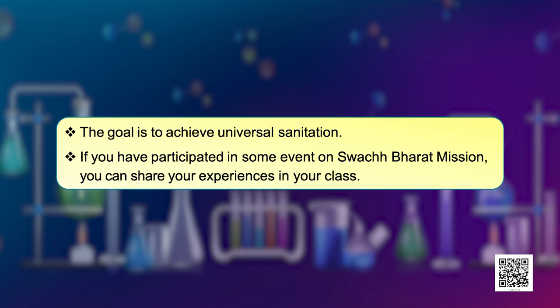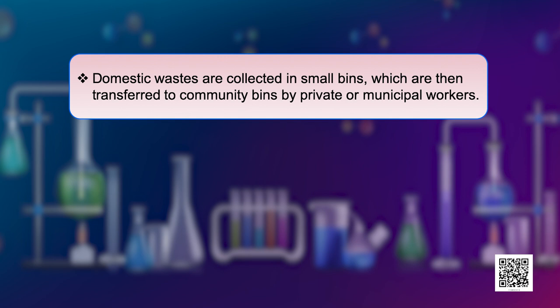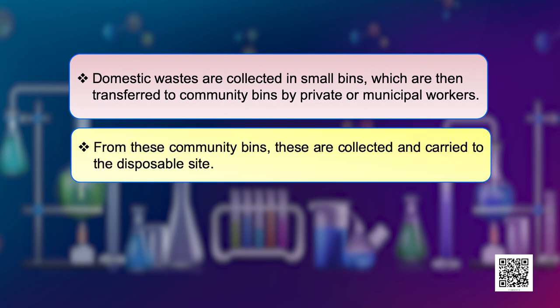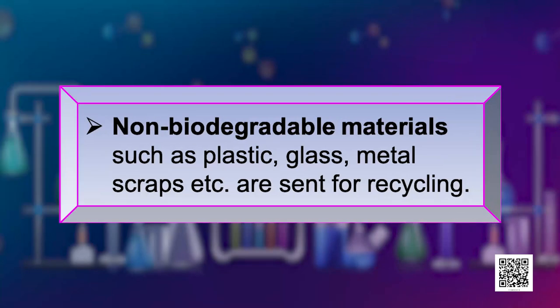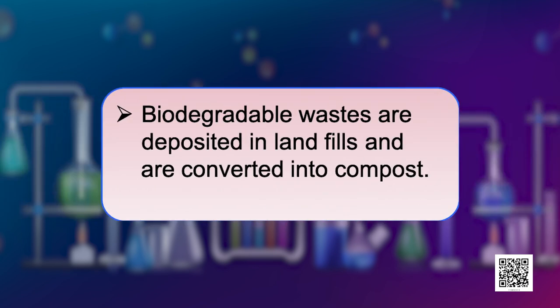If you have participated in some of the events with reference to the Swachh Bharat Mission, you can also share your experiences in your class. Coming to the disposal and collection of waste: domestic waste is collected in small bins which are then transferred to the community bins by private or municipal workers. From these community bins, they are collected and carried to the disposal sites. At the site, garbage is sorted out and separated into biodegradable and non-biodegradable materials. The non-biodegradable materials such as plastic, glass, metal scraps, etcetera are sent for recycling, and the biodegradable wastes are deposited in the landfills where they are converted into compost.